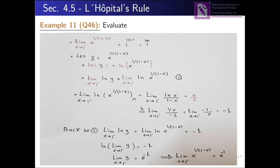So we have the limit of ln(x)/(1−x) when x approaches 1 from the left. Evaluating directly: ln(1)/(1−1) = 0/0. Since we have the indeterminate form 0/0, we can apply L'Hôpital's rule.